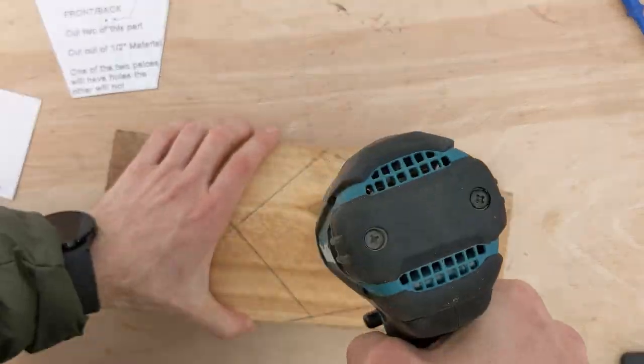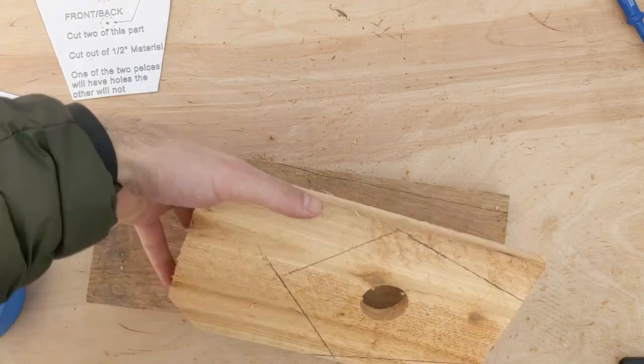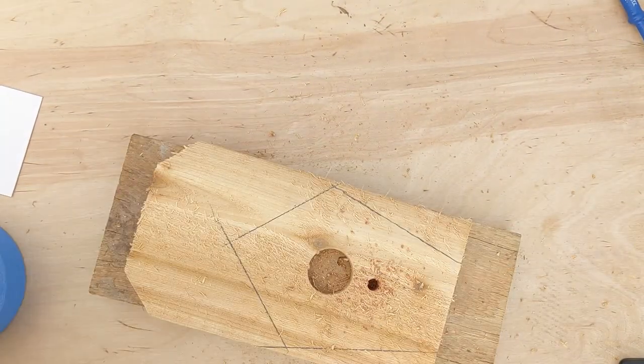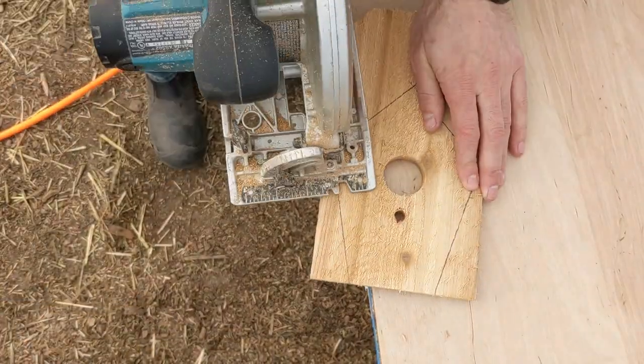Using a one and a quarter inch hole saw, cut the bigger hole. Use a three-eighths drill bit to cut the smaller hole. Carefully make your profile cuts.